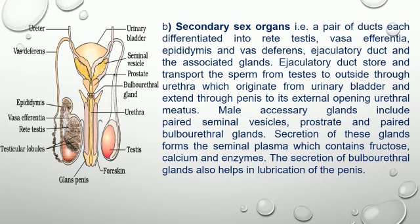Male accessory glands include paired seminal vesicles, the prostate, and paired bulbourethral glands. The secretions of these glands form the seminal plasma, which contains fructose, calcium, and enzymes. The secretion of the bulbourethral glands also helps in lubrication of the penis.